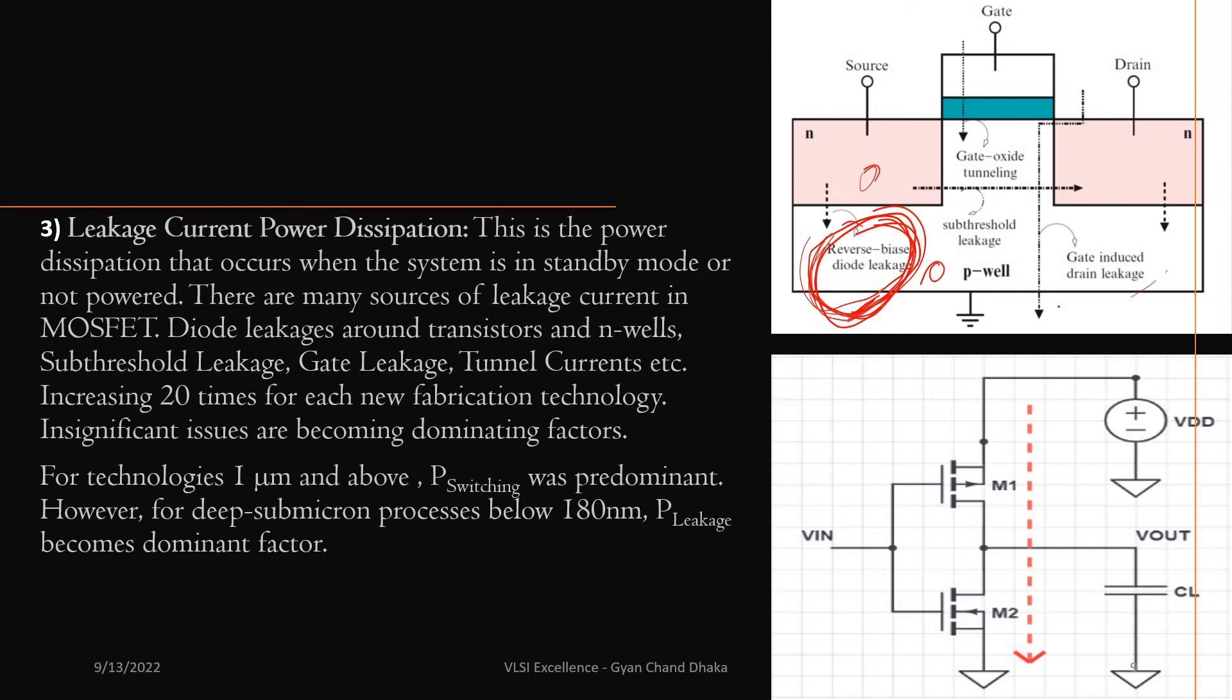Then we have gate induced drain leakage. When the drain voltage is significantly high, there is a formation of gate and drain overlap, and that causes the gate induced drain leakage. Then we have current due to the gate oxide tunneling.